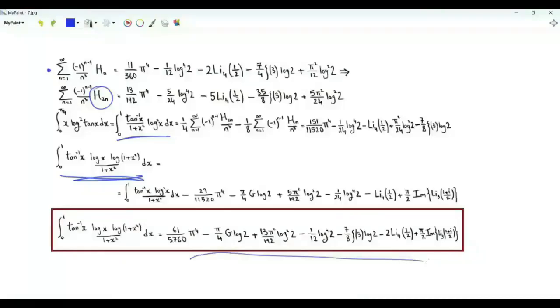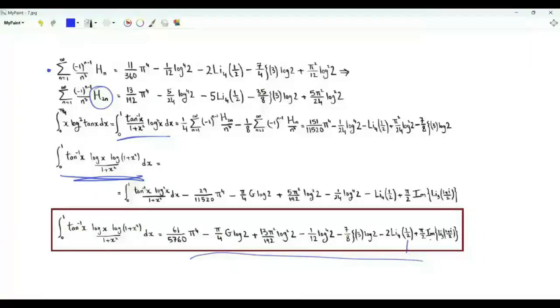This integral equals a closed-form expression involving π, log 2, Catalan's constant, ζ(3), the imaginary part of the trilogarithm Li₃((1+i)/2), and the polylogarithm of order 4 evaluated at 1/2.